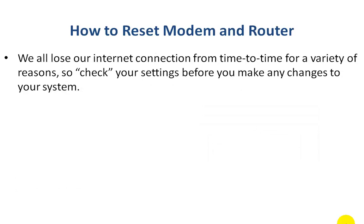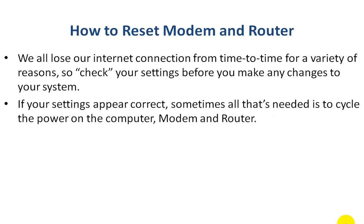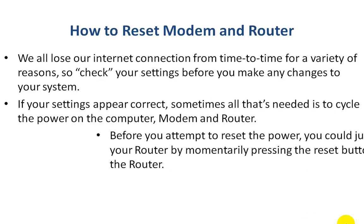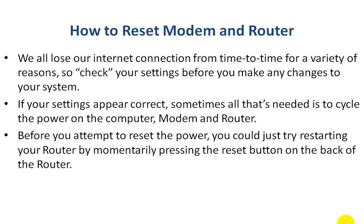We all lose our internet connection from time to time for a variety of reasons, so check your settings first before making any changes to your system. If your settings appear correct, sometimes all you need is to cycle the power on the computer, the modem, and the router. You can individually restart just one device, but for best results you want to do all three. Before you attempt a full power reset, you could try just restarting your router by momentarily pressing the reset button on the back.